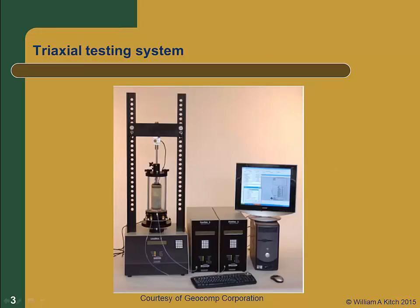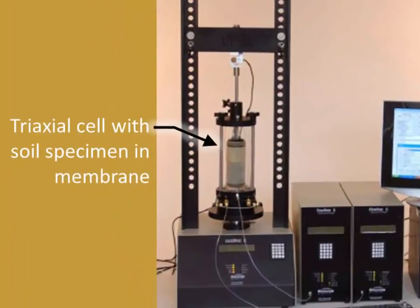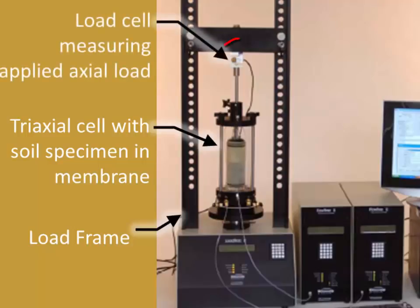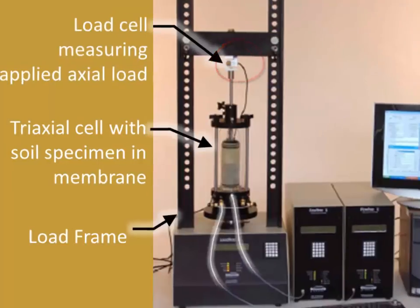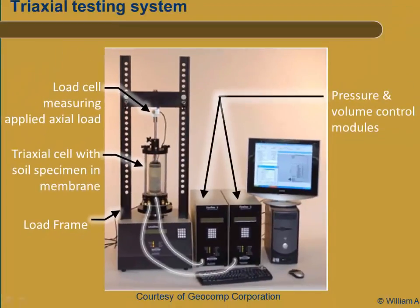This is a picture of a typical triaxial test. The specimen being tested is located in the triaxial cell and enclosed in a flexible membrane. The triaxial cell is placed in a load frame, whose purpose is to apply a vertical load to the specimen. This load is measured by a load cell located near the top of the load frame. Tubing connects the cell to pressure and volume control modules, which regulate and measure the pressure within the cell and control drainage of pore fluid out of the specimen. A computer data acquisition system controls the test and records the data.